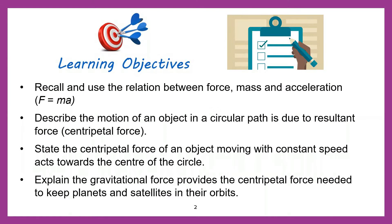By the end of the lesson, you should be able to recall and use the relation between force, mass and acceleration. You will be able to describe the motion of an object in a circular path is due to a resultant force, which is known as centripetal force. The centripetal force of an object moving with constant speed acts towards the center of the circle. You should also be able to explain how gravitational force provides the centripetal force needed to keep planets and satellites in their orbits.